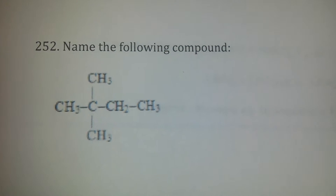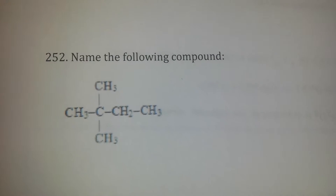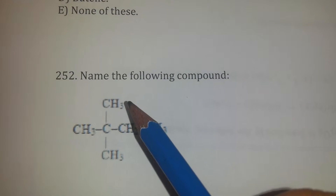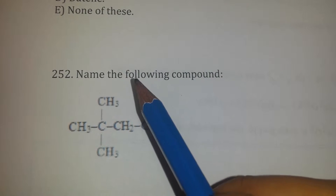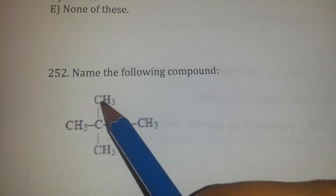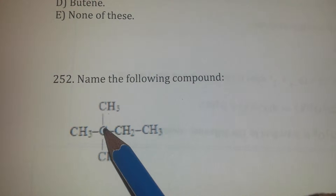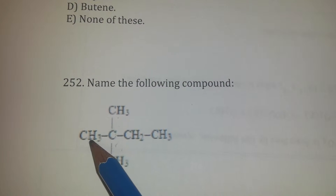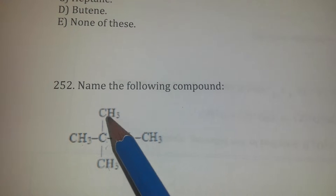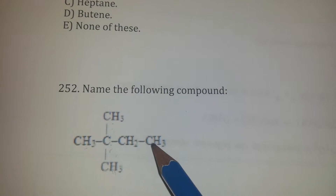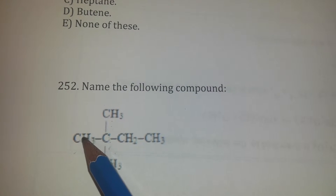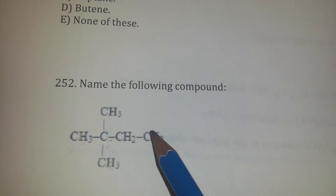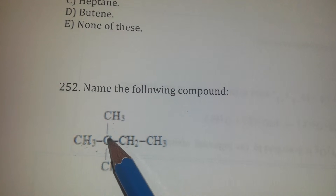Name the following compound. We know that both of the methyls are attached to number 2, which makes it dimethyl, but in this case you don't only count from this one — two. It will also count from one, two, three, which makes it two.